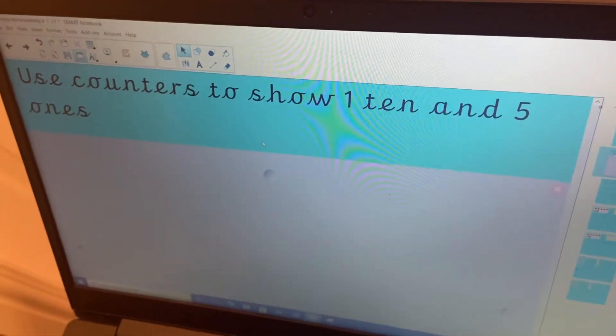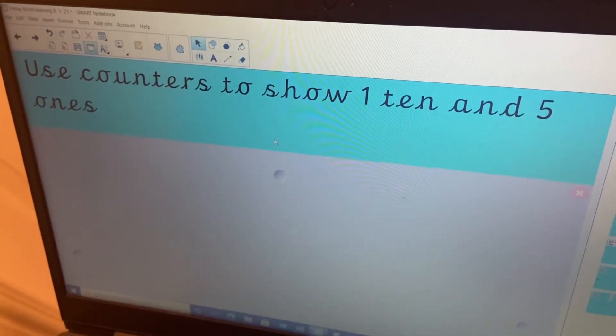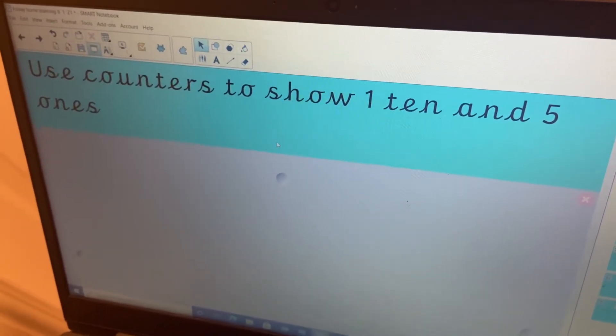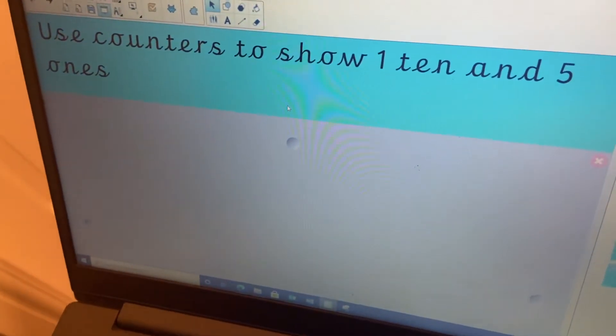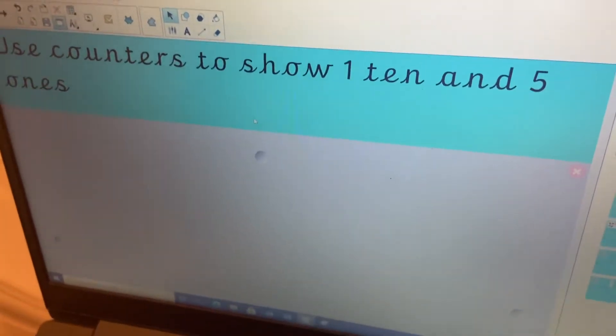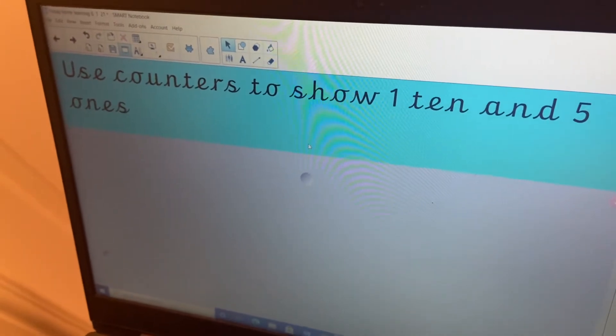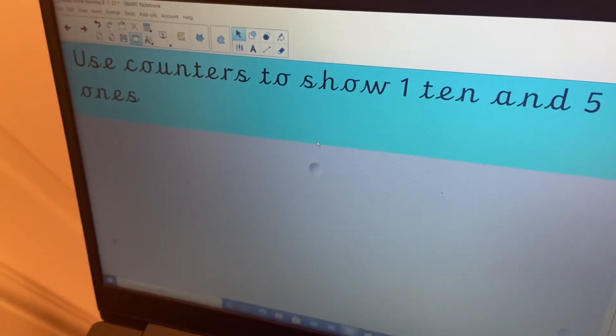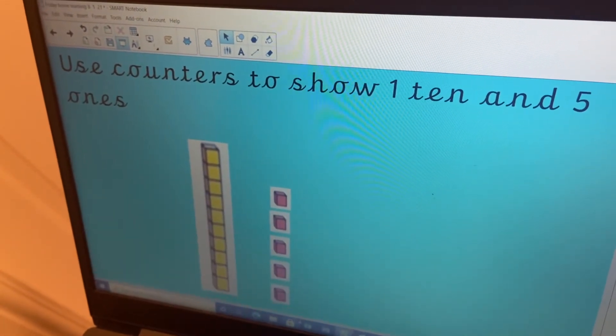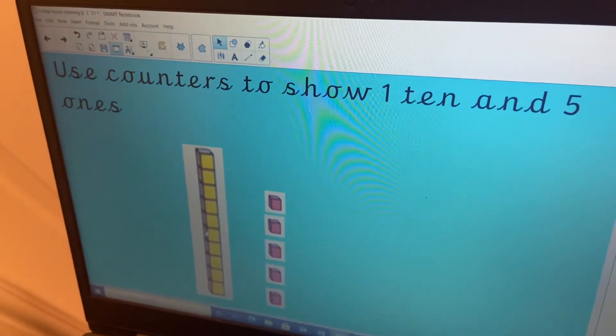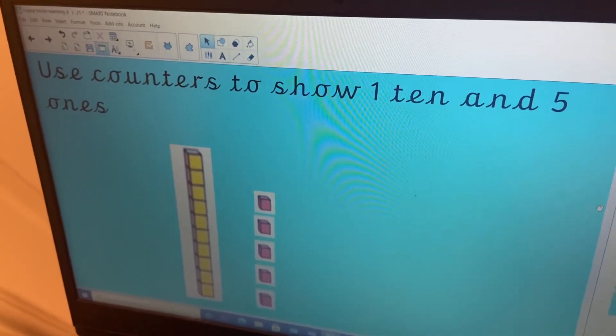So your first job is to use counters to show one ten and five ones. If you don't have counters you might like to use little Lego pieces or you could use blocks or you could even draw it. So pause the video and have a go at showing one ten and five ones. And here we've got one ten and we've got one, two, three, four, five ones.